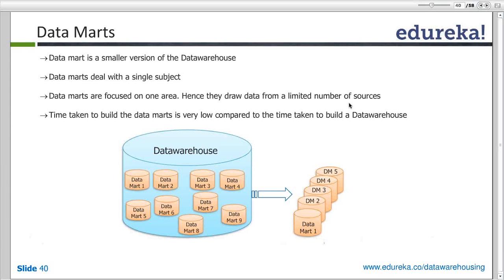Looking at this slide, you can see data marts one through nine inside a data warehouse. A data mart is a single subject-specific data warehouse, and combining all these smaller data marts forms a complete data warehouse. We will discuss further approaches to how to design data marts from a data warehouse later in this class.